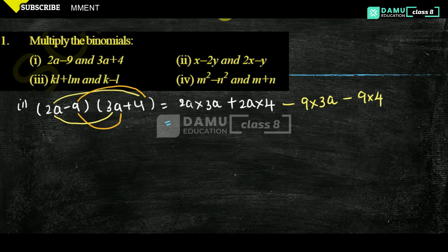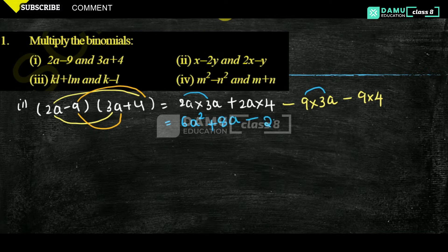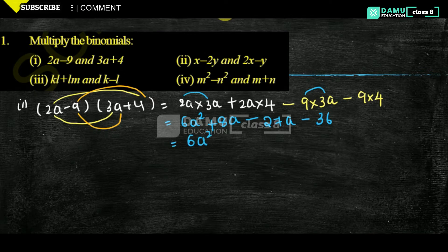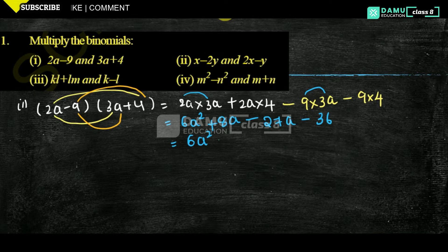So that is the case. So 2a: 2 into 3, first multiply the numerals — 2 into 3 is 6, a into a is a squared. Plus 2 into 4 is 8a. Then minus 9 threes are 27a, minus 9 fours are 36. Then combining the a terms — 8a and minus 27a — that gives minus 19a. So we have 6a² minus 19a minus 36.